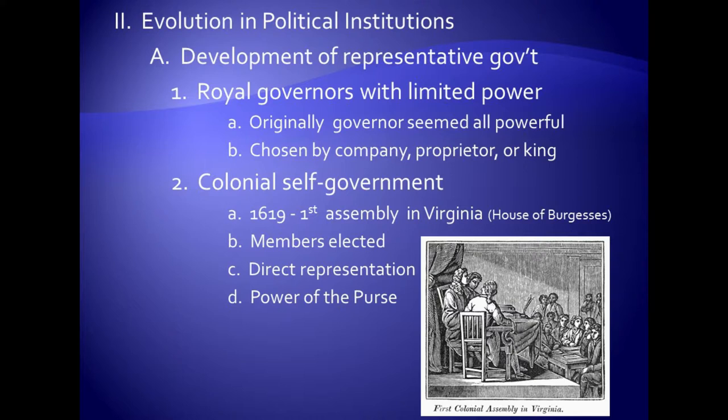Members of the colonial assembly in Virginia were elected by counties, with each county choosing anywhere from two to seven representatives to represent that county. What develops in colonial government — different from England — is what we call direct representation. Men voted in by people in, say, Henrico County, Virginia, represented the interests of people living in Henrico County.